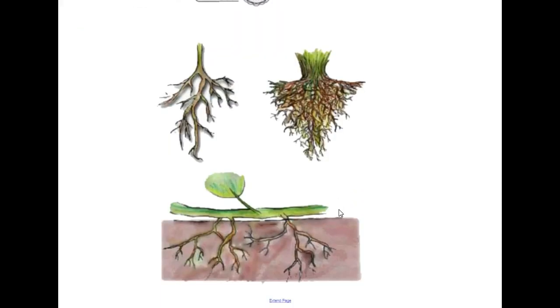And lastly, we have our three examples of root types. Here we have our tap root. We mentioned that the dandelion was a good example of this.